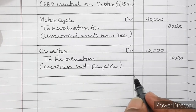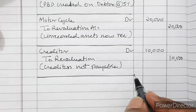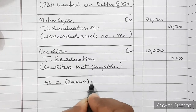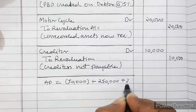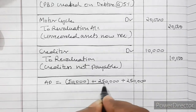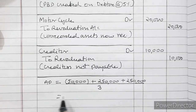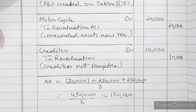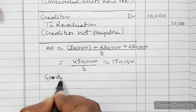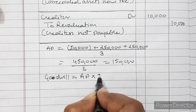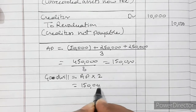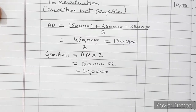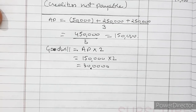Now comes the treatment of goodwill. Goodwill is valued at 2 years' purchase of last 3 years' profit. Average profit = (loss of Rs. 50,000 + profit of Rs. 2,50,000 + profit of Rs. 2,50,000) / 3 = Rs. 4,50,000 / 3 = Rs. 1,50,000. Goodwill = average profit × 2 = Rs. 1,50,000 × 2 = Rs. 3,00,000.